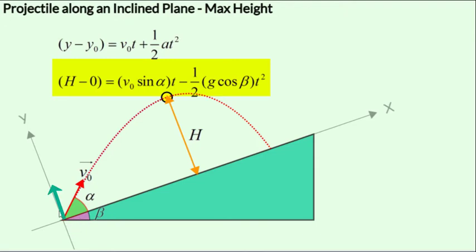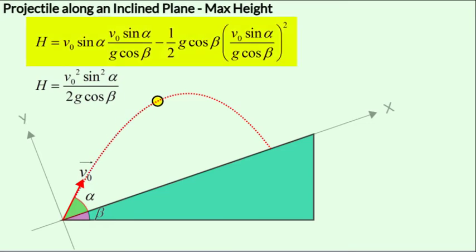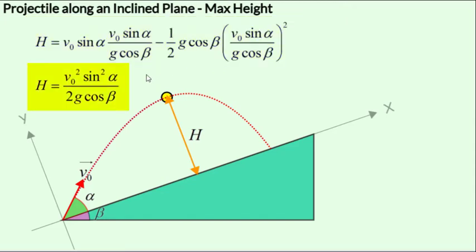The initial y velocity is V₀ sin α and the acceleration component in the y direction is minus G cos β. Substituting for time t as V₀ sin α over G cos β into the t and t² terms, we obtain the height H as V₀² sin² α over 2G cos β.